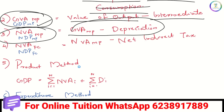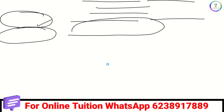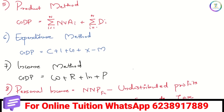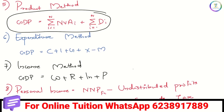The product method, expenditure method, and income method — these three methods are very important. In the product method, the GDP calculation equation is: Sigma i equals 1 to N of NVA-i, plus Sigma i equals 1 to N of D-i. That is net value added plus depreciation gives GDP.